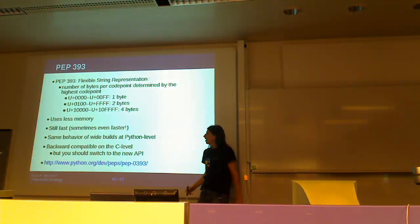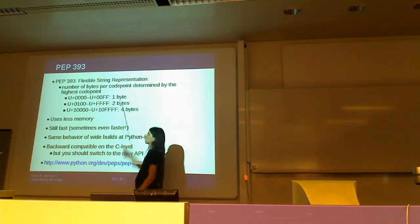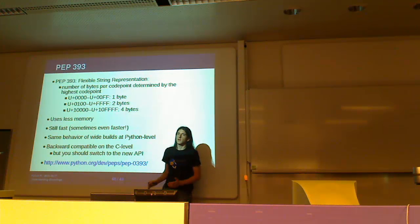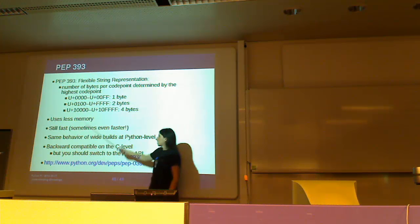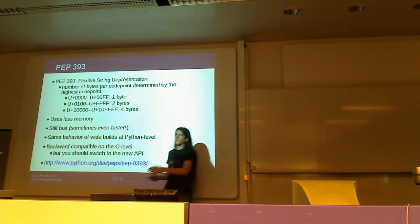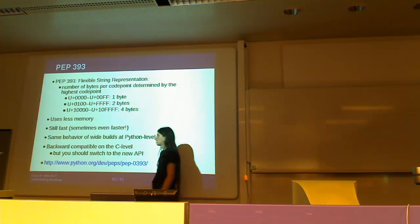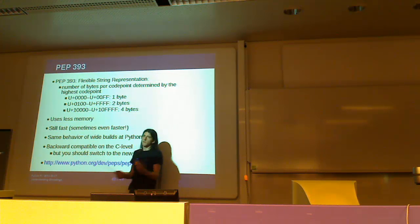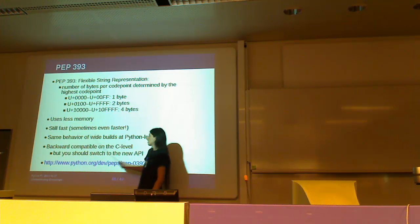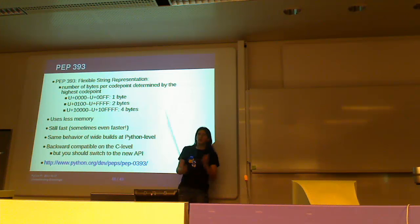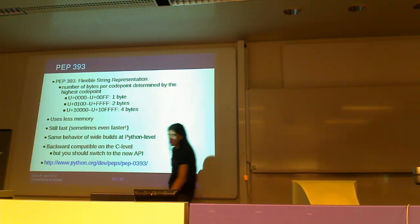This is finally solved in Python 3.3, which will be released next year. There's a new PEP — Python Enhancement Proposal — that changes how Unicode is represented internally so the user is not affected. It uses as many bytes as needed — so it's more memory efficient — and it's still fast, because allocating less memory is itself a speedup. For you as a user the behavior is like the wide build: everything works correctly. At the C level there's a new API, compatible with the old one, but you should switch to the new one as soon as possible.